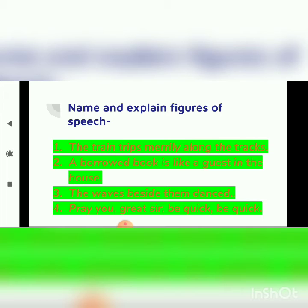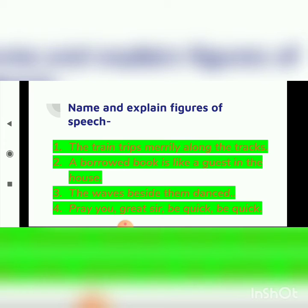Quiz question one: 'The train trips merrily along the tracks.' When such a question comes, first identify the figure of speech, then explain why. The answer is alliteration, because the sound TR is repeated — you can see 'train' and 'trips' both start with TR. The sound of TR is repeated pleasingly.